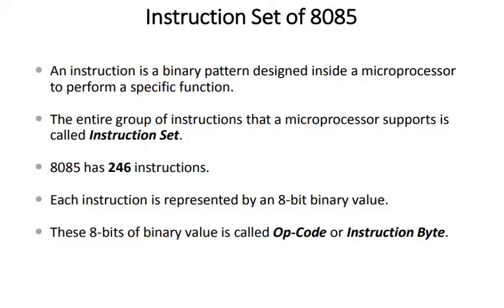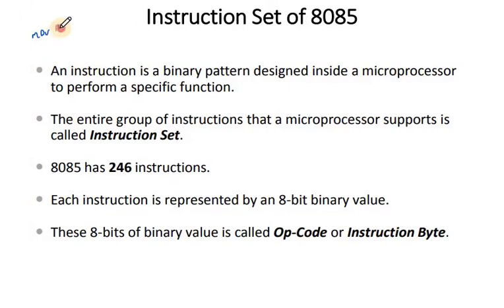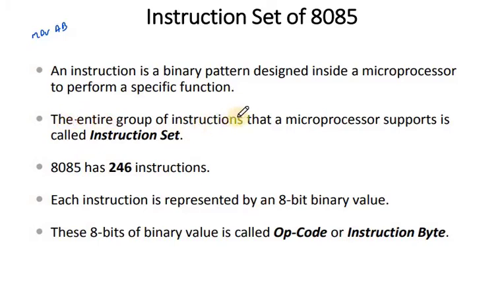We are now dealing with the instruction set of 8085. An instruction is a binary pattern designed inside a microprocessor to perform a specific function. We have already discussed instruction format, including the MOV A,B instruction, its specific binary pattern, addressing types, and 1-byte, 2-byte, and 3-byte code details. The entire group of instructions that a microprocessor supports is called the instruction set, which we are going to discuss now.